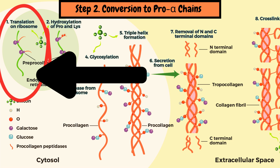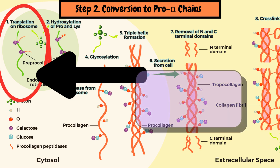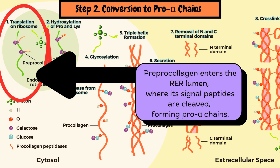Step 2: Conversion to pro-alpha chains. Pre-procollagen enters the lumen of the rough endoplasmic reticulum, where signal peptides are cleaved, forming pro-alpha chains.